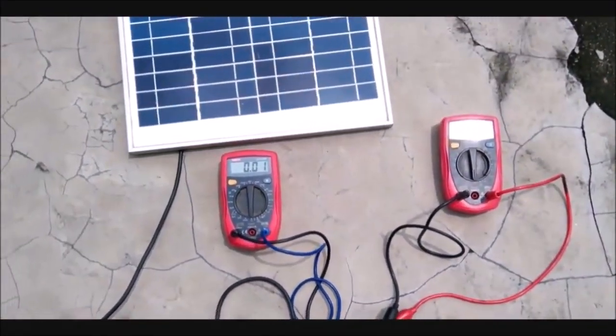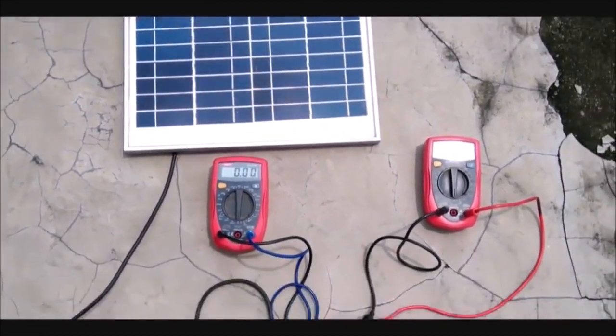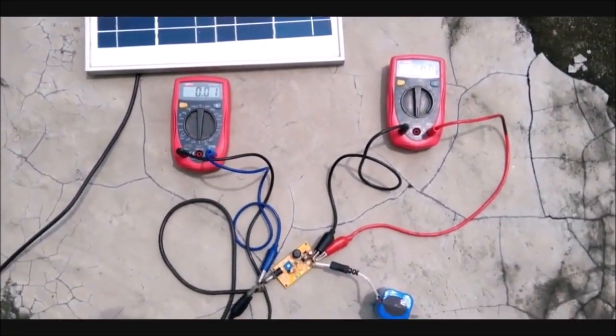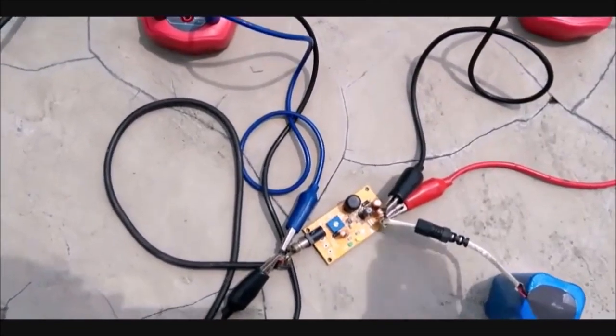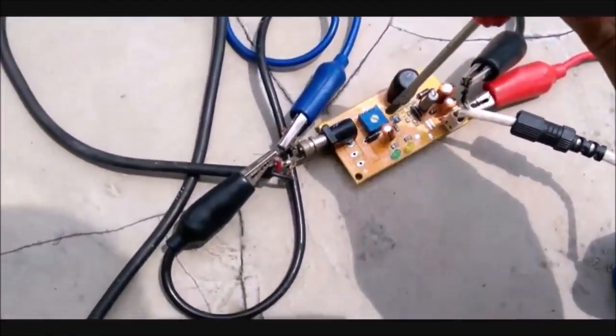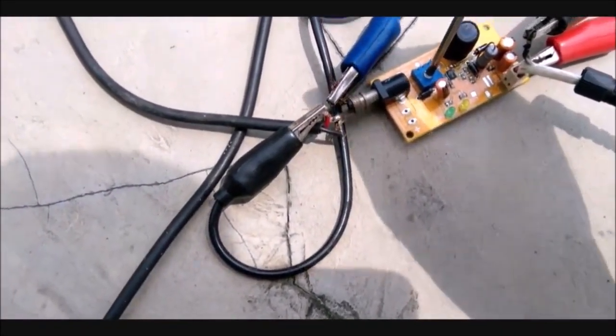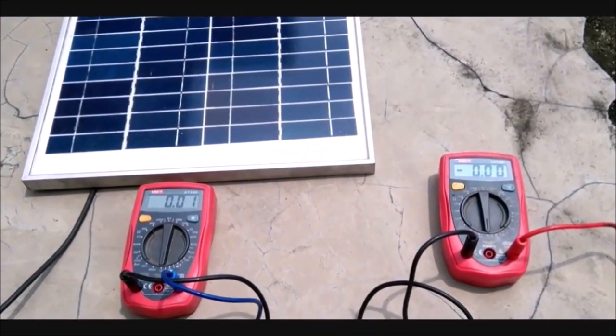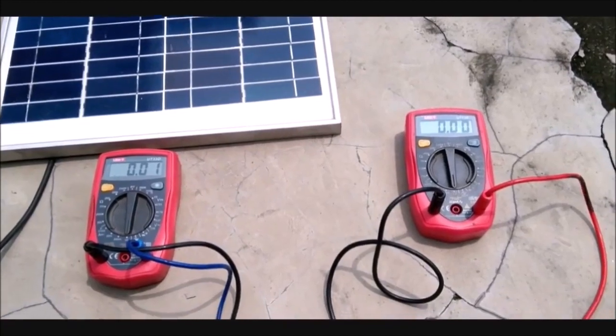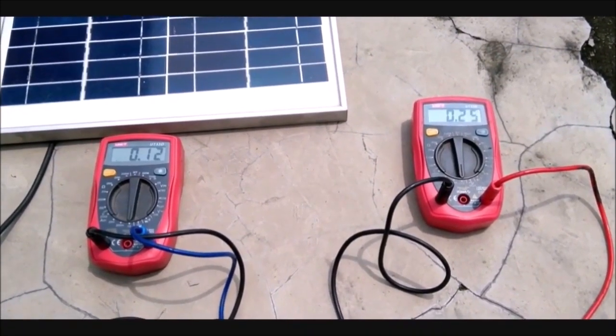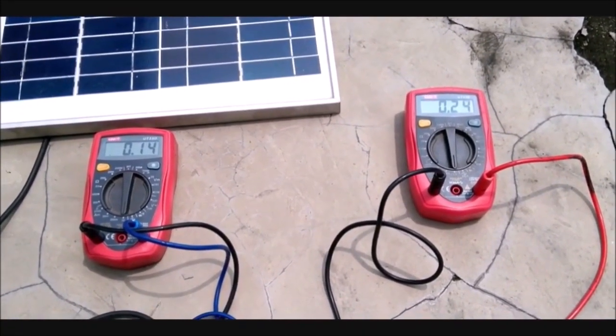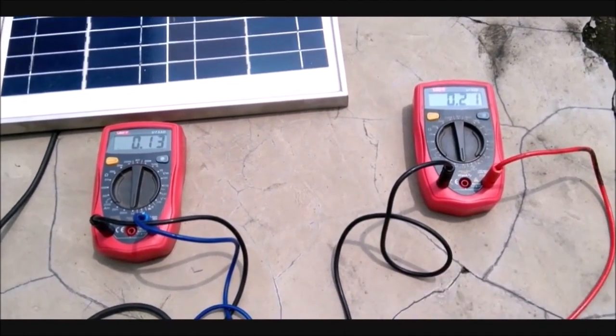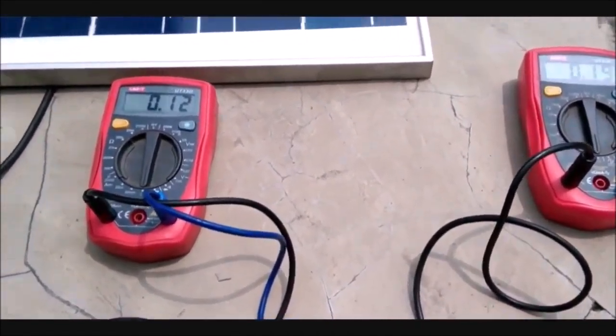So here we are on the rooftop with our testing setup. The sunlight is at the maximum brightness now so we will set the MPPT value by changing the potentiometer here. This will inform the driver IC that it is the maximum power we can get from the solar panel. The multimeter on the left shows the current drawn from the solar panel and the multimeter on the right shows the charging current of the battery. I am adjusting the port till I see maximum values here.